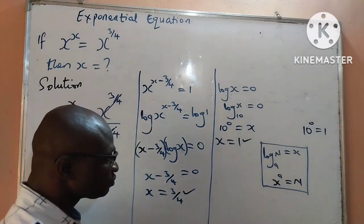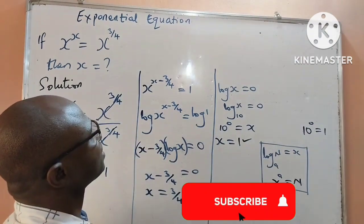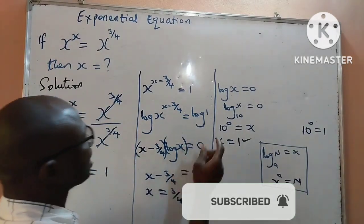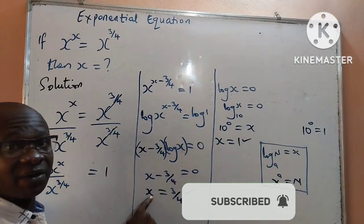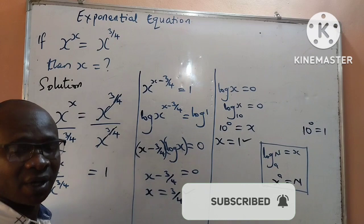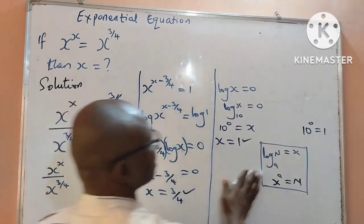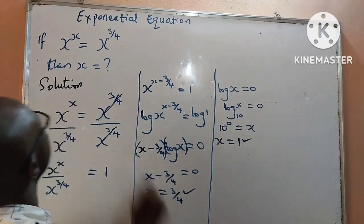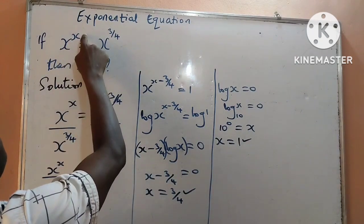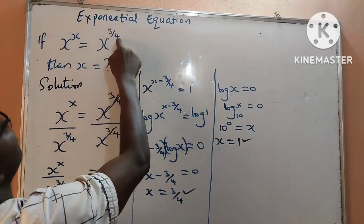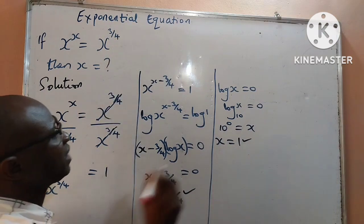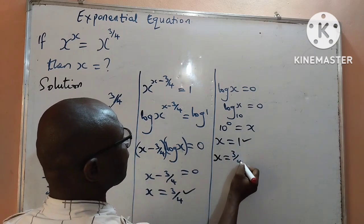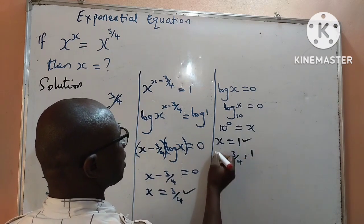In conclusion, the values of x for this exponential equation — where x to the power x is equal to x to the power of 3 over 4 — are x equals 3 over 4 and x equals 1.